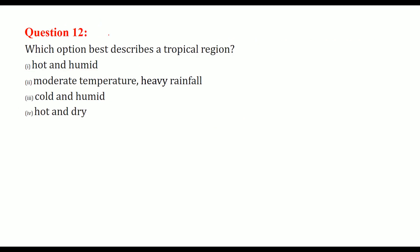Which option best describes a tropical region? It's hot and humid. These are questions on animal adaptation and plant adaptation to different climate conditions. Thank you so much and take care of yourself.